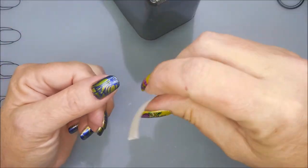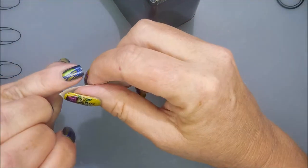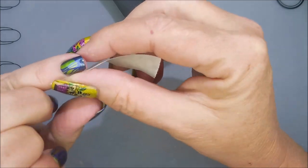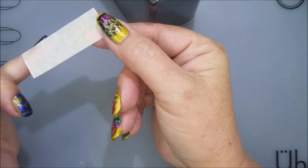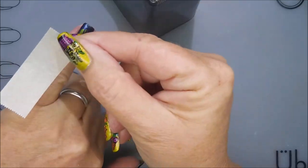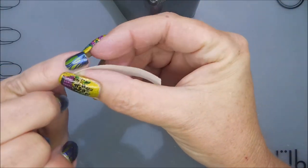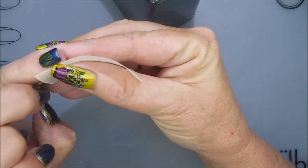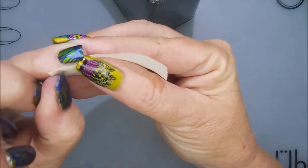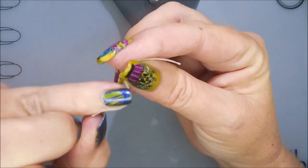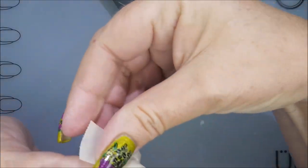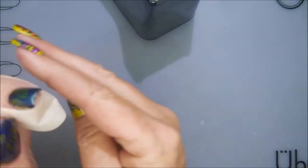What you do is you get a little piece about as long as my pinky or your pinky and you start on one side and you just get as close to the cuticle as you can, wrap it around the tip and then back up the other side as close as you can.